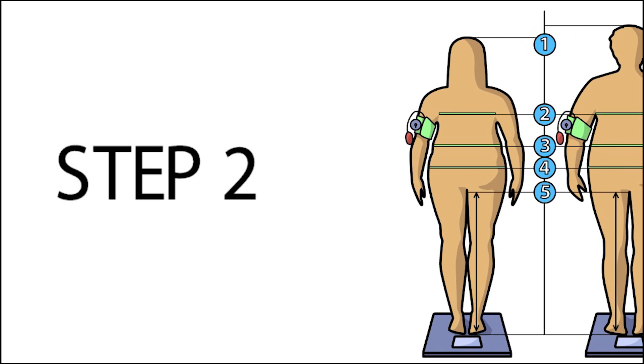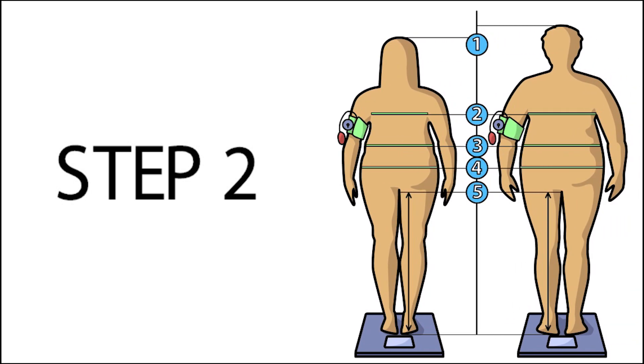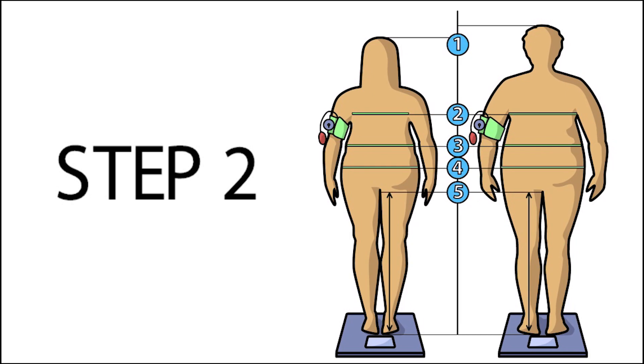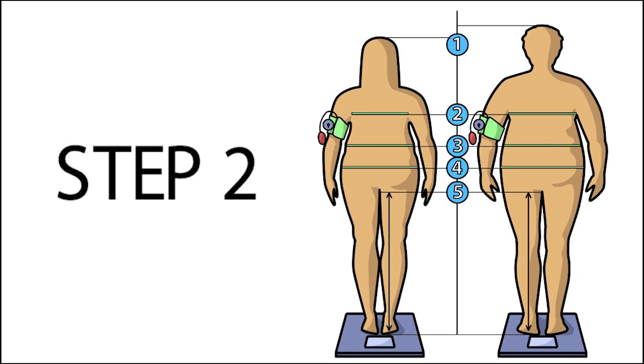Step 2 of STEPS involves the collection of individuals' physical measurements including height, weight, waist circumference and blood pressure. This information is used to determine the proportion of adults that are overweight and obese or have raised blood pressure, two of the key risk factors for development of a chronic disease.